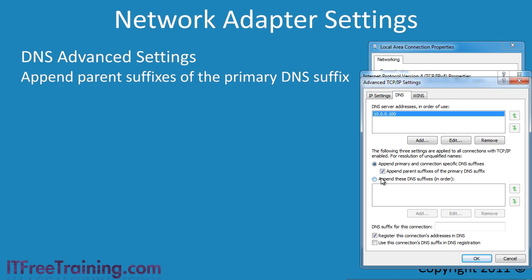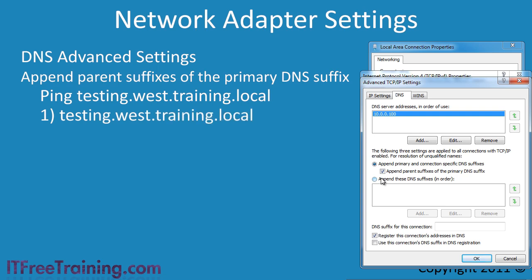Instead, imagine a domain like testing.west.training.local. When you attempt to resolve a DNS name with this option on, the operating system will attempt to resolve it with the full DNS name of testing.west.training.local. If this fails, it will drop the leftmost part of the DNS name, in this case testing, and try again. If it fails again, it will drop west and try training.local. If this fails too, it will respond that the DNS name could not be found.